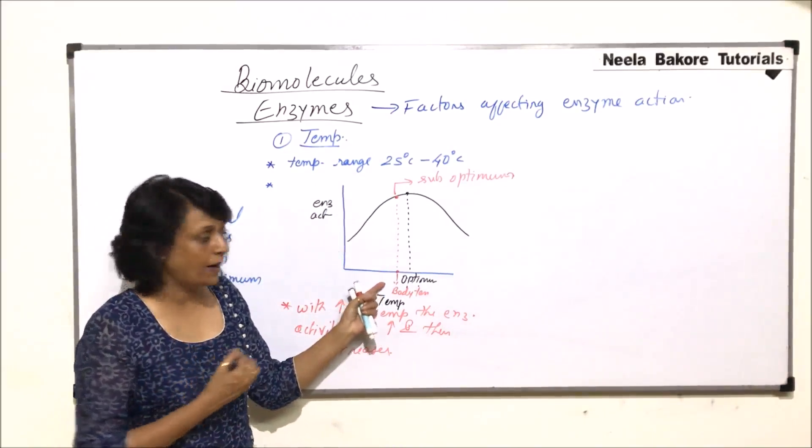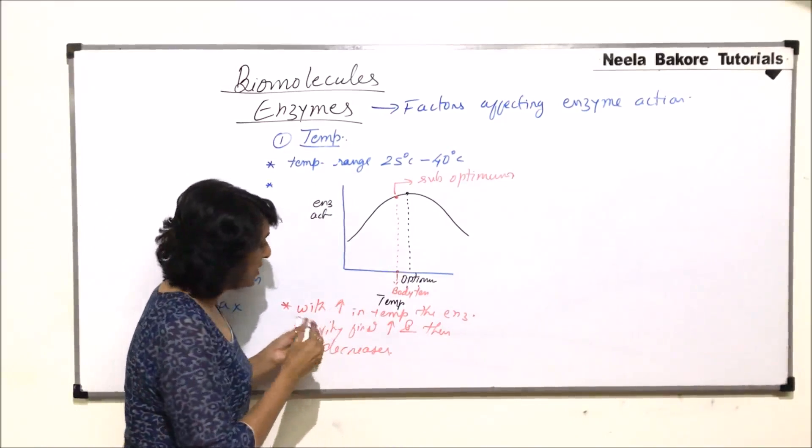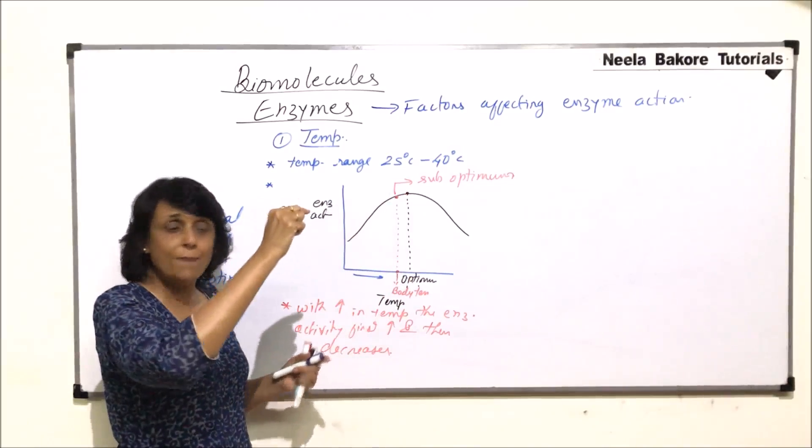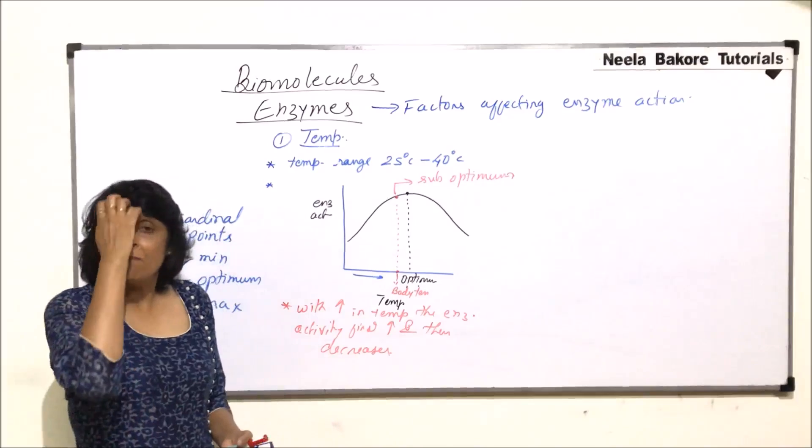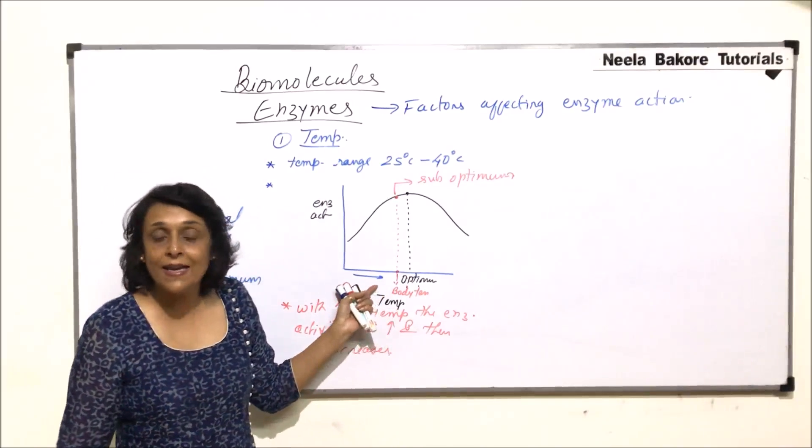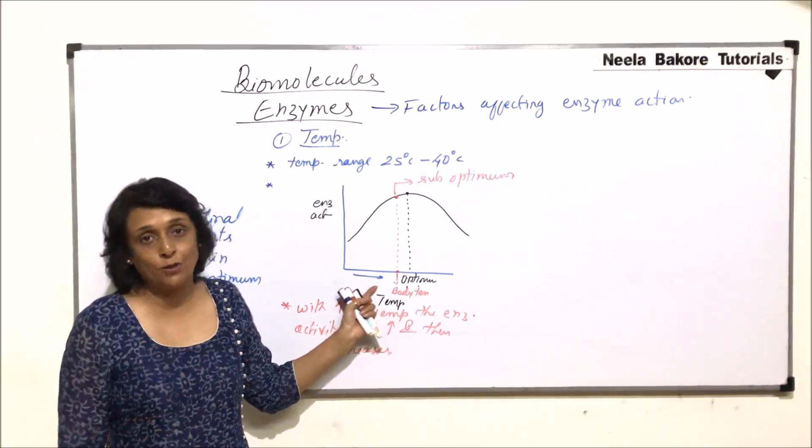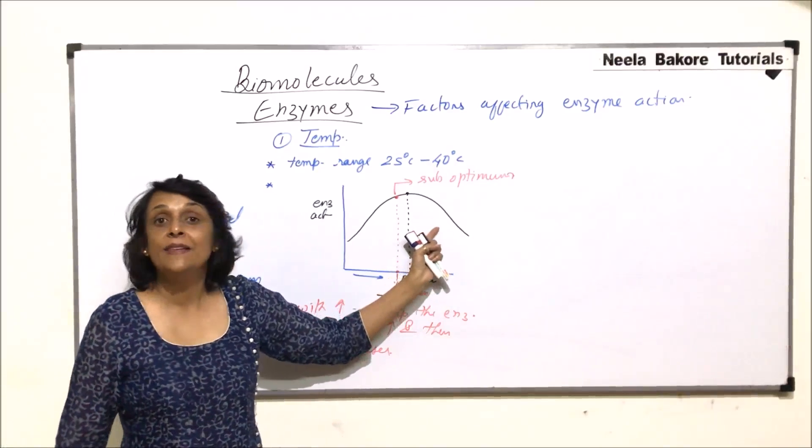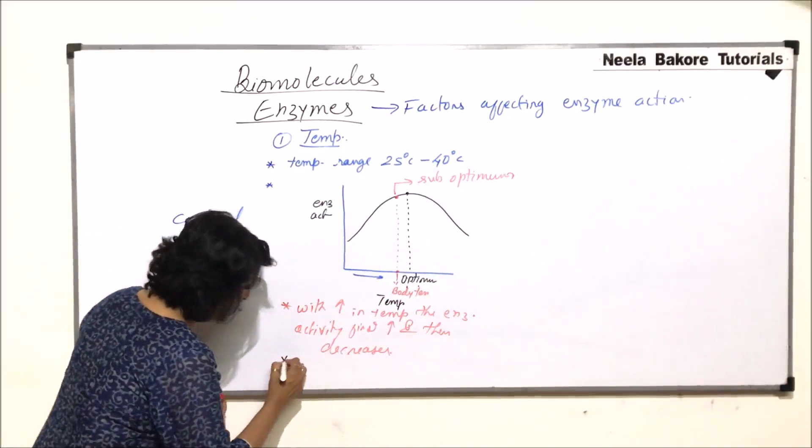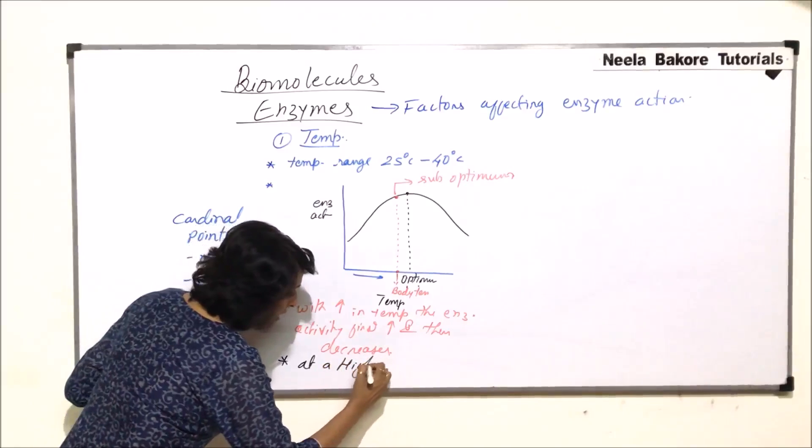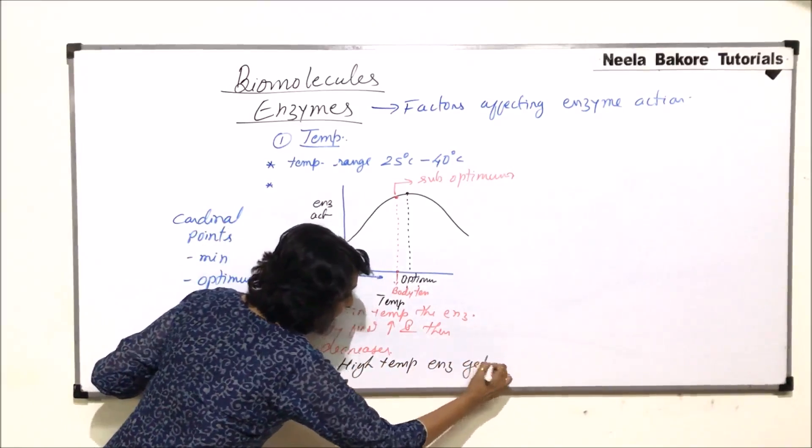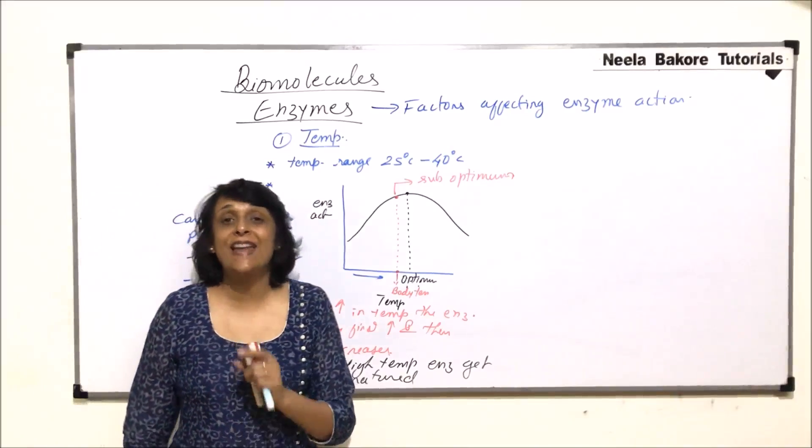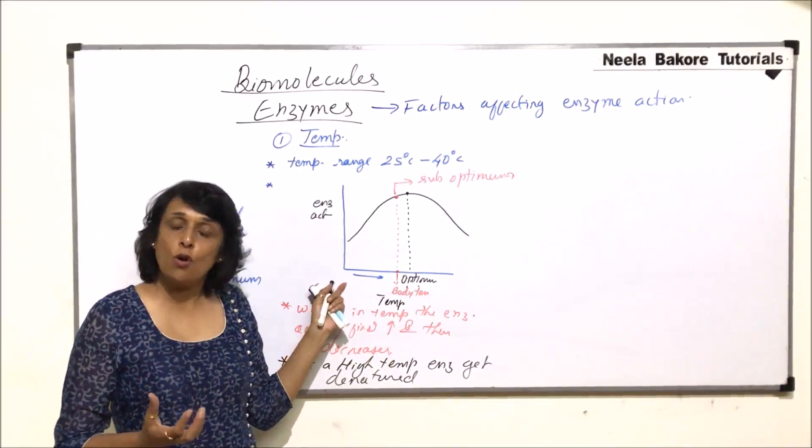Because we are talking about our body, our body temperature is here. When the temperature increases, as the temperature increases, the enzymatic activity has gone up and then it decreases. So having mild fever is a good sign that our body is fighting with that pathogen. But very high fever is not a good sign. Because at a high temperature, the enzymes, they get denatured. Denatured means their structure is damaged.